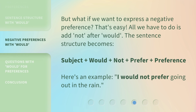But what if we want to express a negative preference? That's easy. All we have to do is add 'not' after 'would.' The sentence structure becomes: subject + would + not + prefer + preference. Here's an example: 'I would not prefer going out in the rain.'